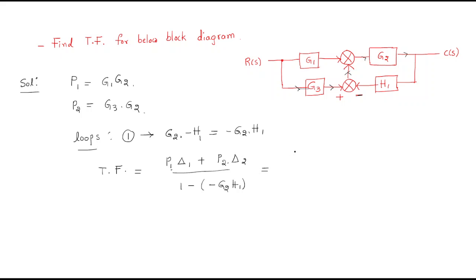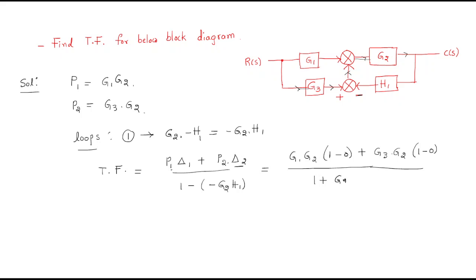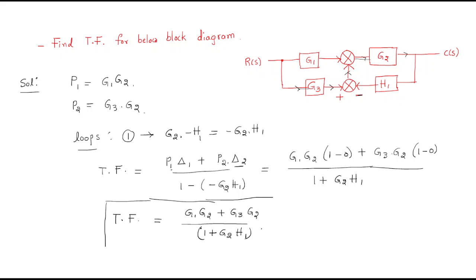Applying Mason's formula: T equals (P1·Δ1 + P2·Δ2) / Δ. The sum of individual loop gains is −G2·H1, so Δ = 1 − (−G2·H1) = 1 + G2·H1. P1 = G1·G2 and Δ1 = 1 (the loop touches forward path 1, so no non-touching loops). P2 = G3·G2 and Δ2 = 1. Therefore the transfer function equals (G1·G2 + G3·G2) / (1 + G2·H1).